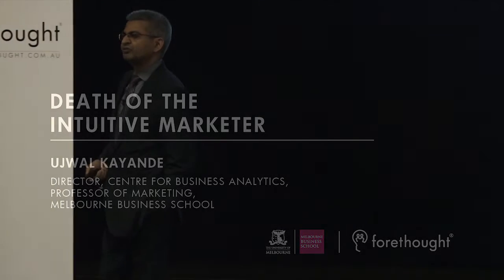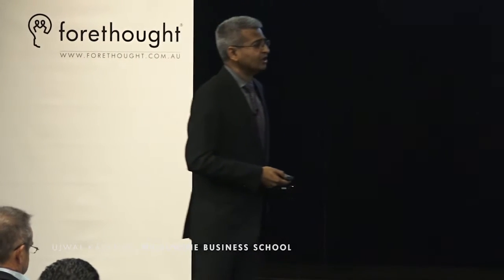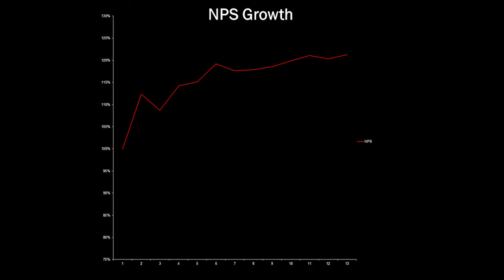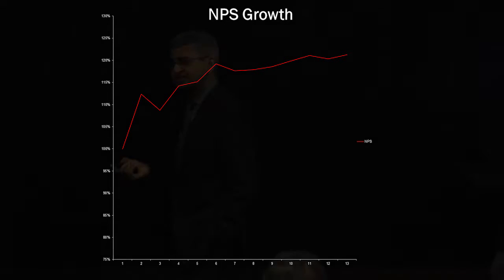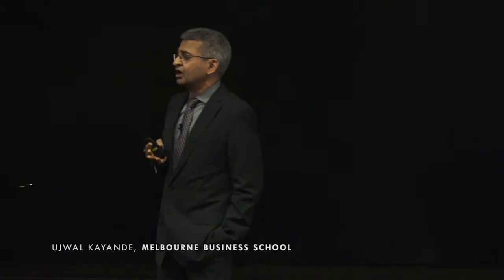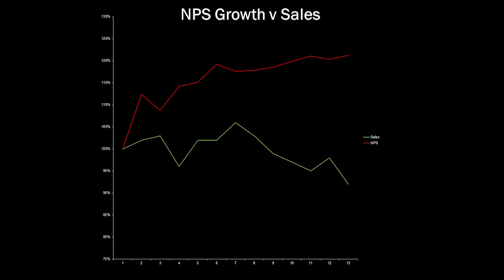A company asked me to come in because they were having a massive issue. They'd done lots of things to improve their NPS and incentivized their folks on the basis of NPS. What they were observing was this fantastic graph where NPS was going upwards over time — brilliant, everything hunky-dory — except there was a problem: sales were actually going generally downwards.